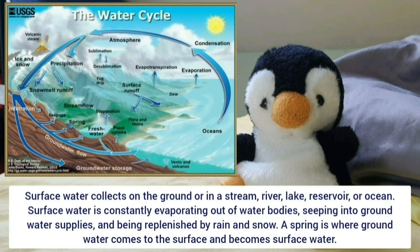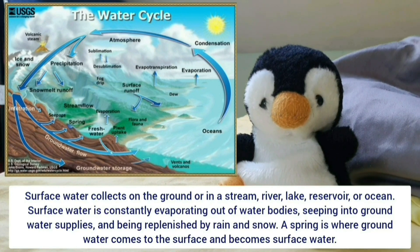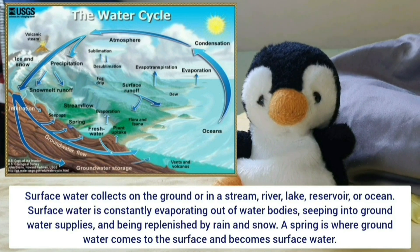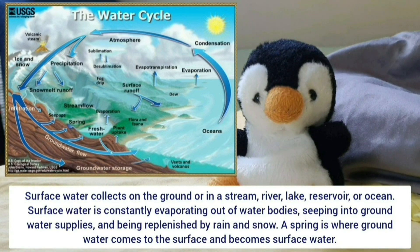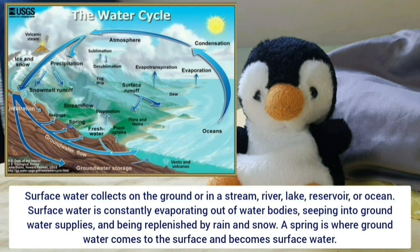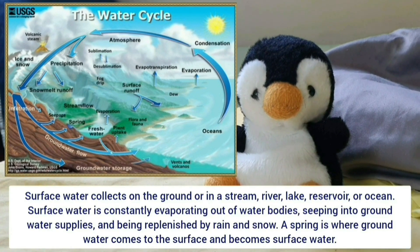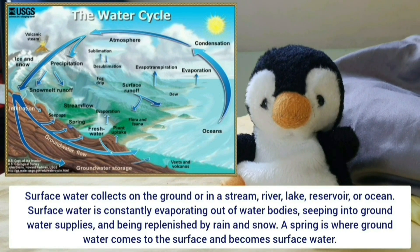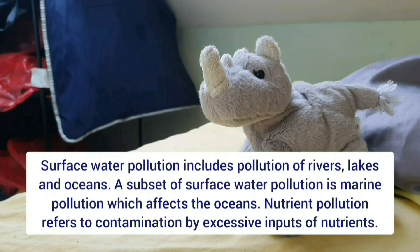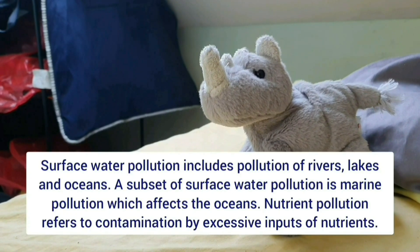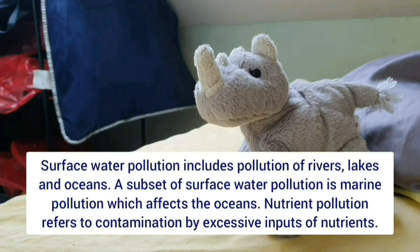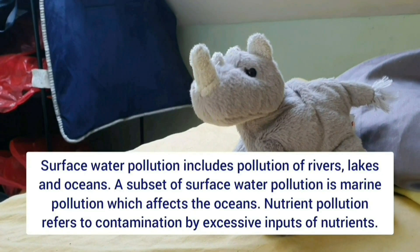Surface water collects on the ground or in a stream, river, lake, reservoir, or ocean. Surface water is constantly evaporating out of water bodies, seeping into groundwater supplies, and being replenished by rain and snow. A spring is where groundwater comes to the surface and becomes surface water. Surface water pollution includes pollution of rivers, lakes, and oceans. A subset of surface water pollution is marine pollution which affects the oceans.